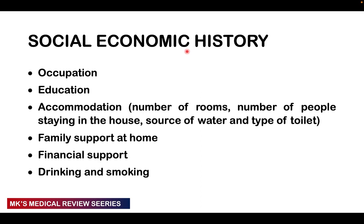For the socioeconomic history, find out the patient's occupation, educational status, where they stay, the number of rooms, the number of people at home, source of water, type of toilet (indoor flushable or outdoor), family support, financial support, and whether they are drinking or smoking — as drinking and smoking are not advisable during pregnancy.